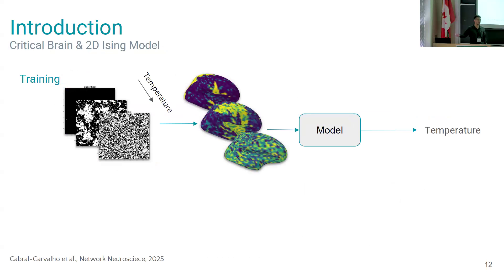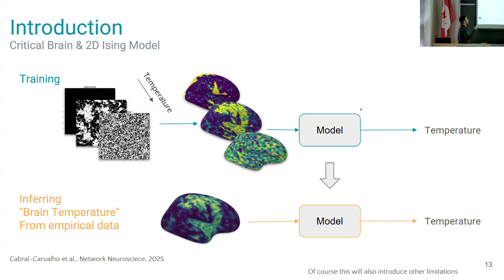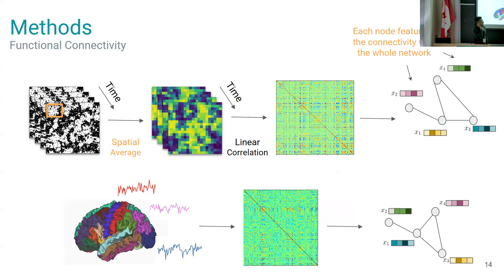So the idea here is actually train a model in the simulations and afterwards use the same model to infer the brain temperature, which is the Ising temperature of the data from the fMRI.